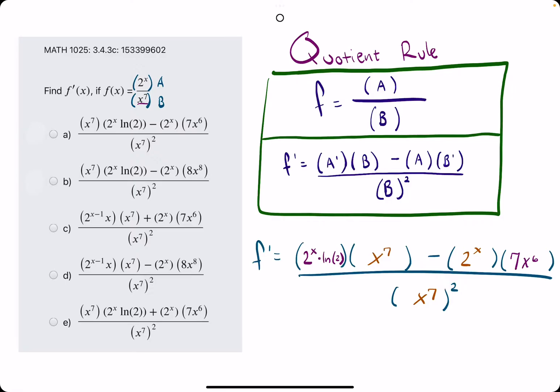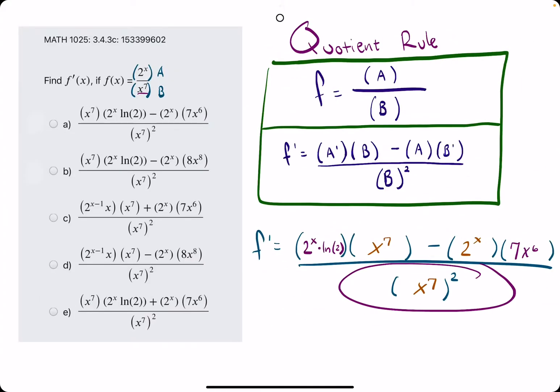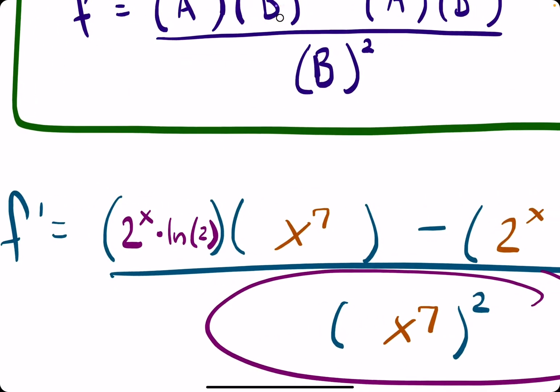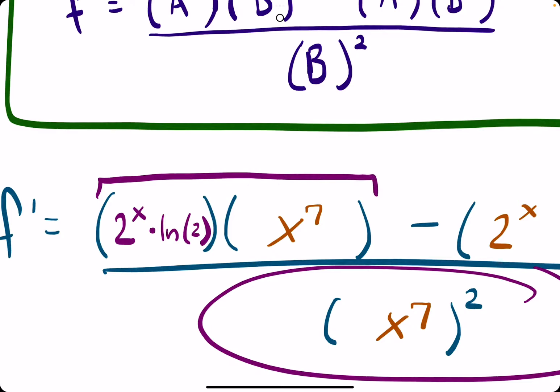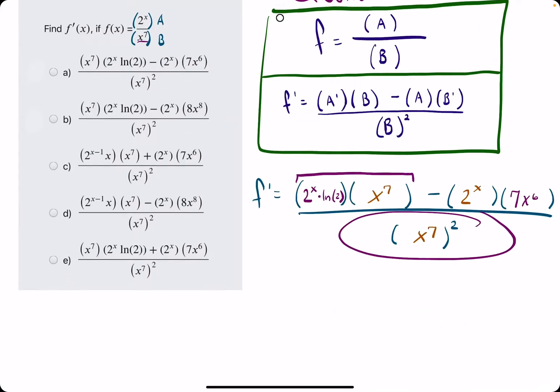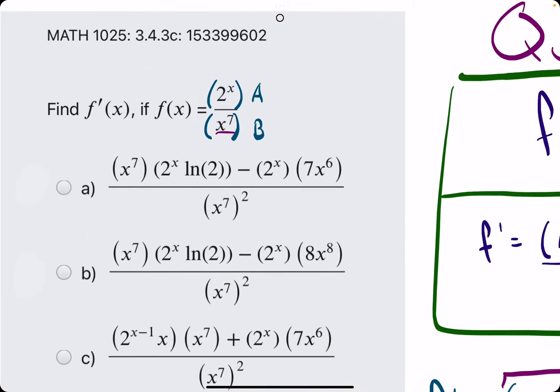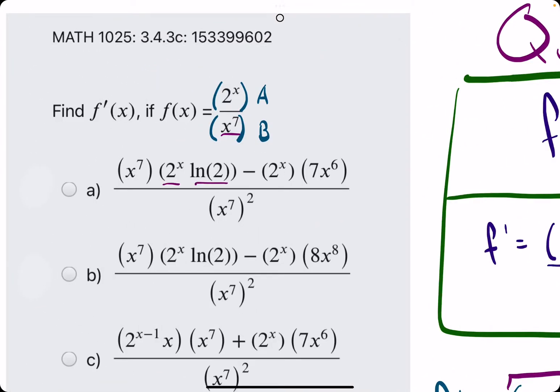Usually a good thing to check for first is, does the denominator have B squared? And it looks like all of them do have B squared. So can't eliminate any just based on that. Next thing to check, let's go ahead and check, are these two terms paired together? 2 to the x, ln of 2, and x to the 7th.